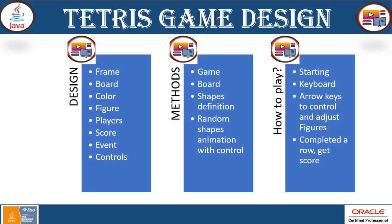Let's take a look at how we are going to implement this. For the design, first we have to have a frame with a board, and that board with some color specification as per your choice. We can have a figure — the figure is nothing but shapes organized in an irregular, random form.